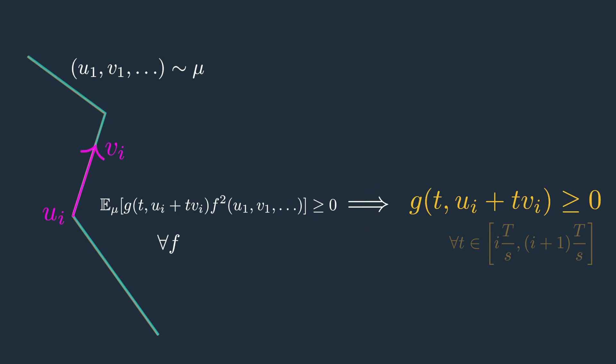Under some mild assumptions, if this expectation is non-negative for a large family of test functions F, then any u_i and v_i that you sample from mu will also make g non-negative.